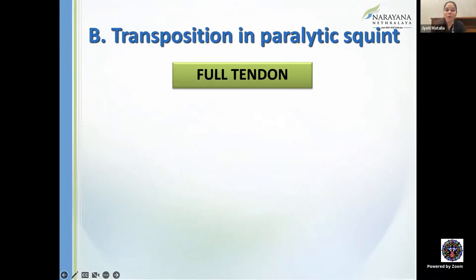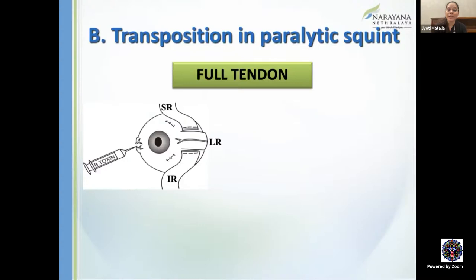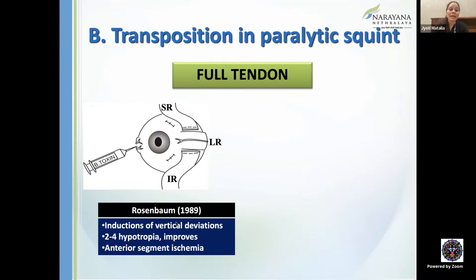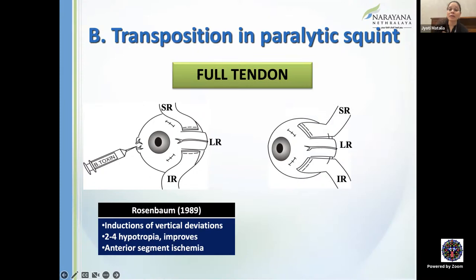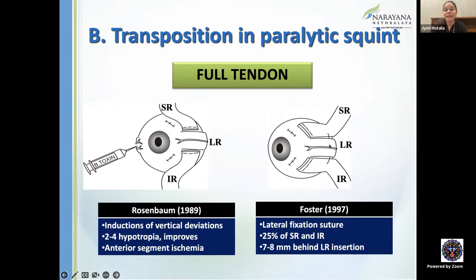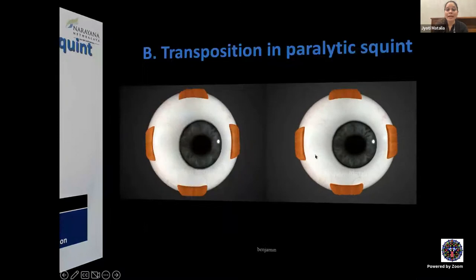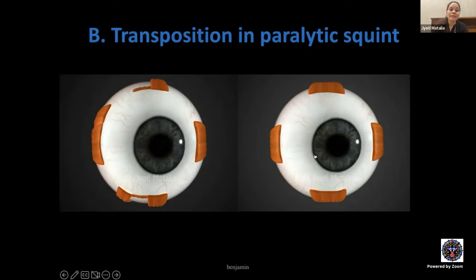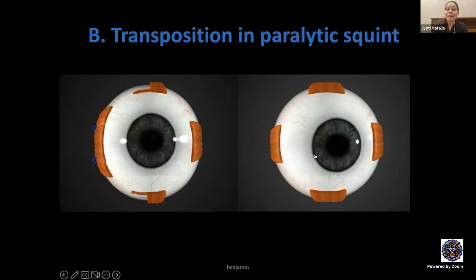Full tendon transposition involves shifting the entire superior and inferior rectus. Do not operate on more than two muscles simultaneously. Rosenbaum's procedure can induce about 2–4 prism diopters of hypertropia — Botox may be given concurrently to manage this. Augmented procedures with a Foster fixation suture 8 mm behind the LR insertion, placed along the longitudinal axis, give better effect but may induce hypotropia. In animation: the half-tendon displacement versus full-tendon displacement sutured 8 mm posteriorly shows clearly superior effect with the full tendon technique.